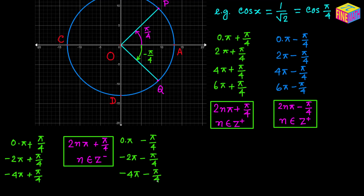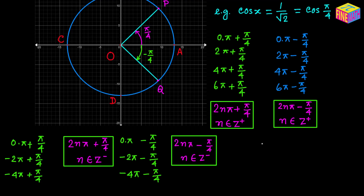That would be negative 4pi minus pi over 4. The pattern here is a negative even multiple of pi minus pi over 4. Looking at the first two green boxes, the general solution for x looks like 2n times pi plus or minus pi over 4, where n is a positive integer.